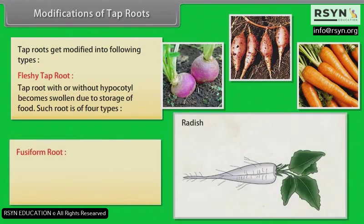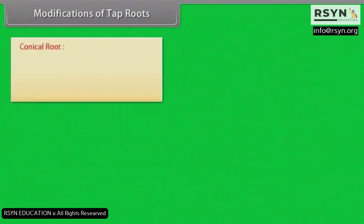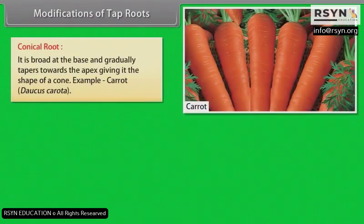Fusiform root: Such root becomes thicker in the middle and tapering on both ends, assuming a spindle shape. Example: radish (Raphanus sativus). Conical root: It is broad at the base and gradually tapers towards the apex, giving it the shape of a cone. Example: carrot.